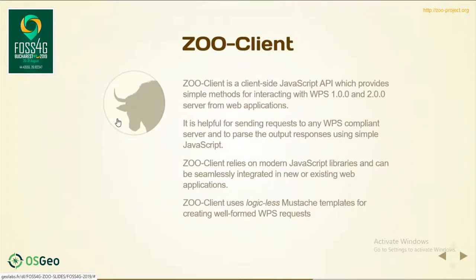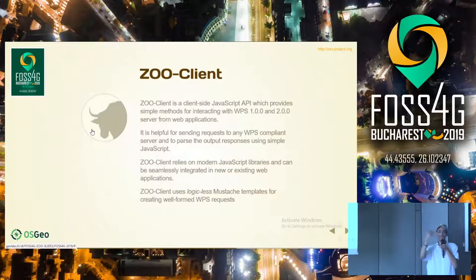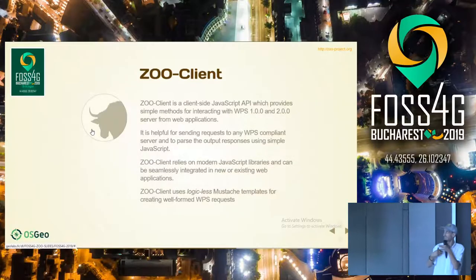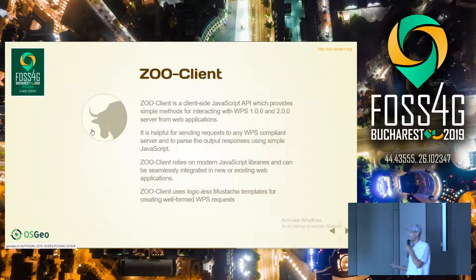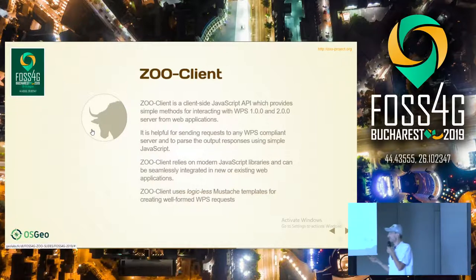Then we have the ZOO client. The ZOO client is a JavaScript API, but this time it works from your web browser, not on the server side. It handles the writing of execute requests, GetCapabilities, and DescribeProcess, as well as parsing of the results. It is based on a logic-less Mustache template, was made in 2015, and is still working today.